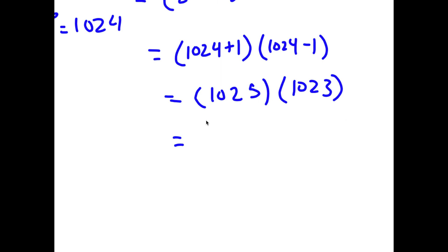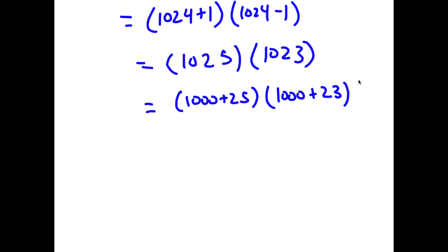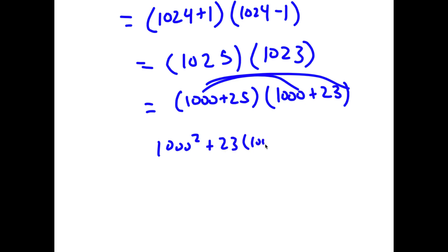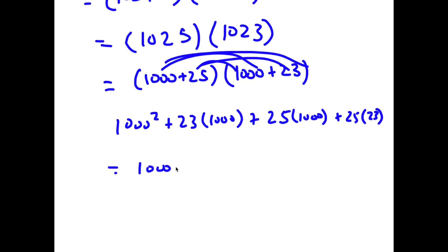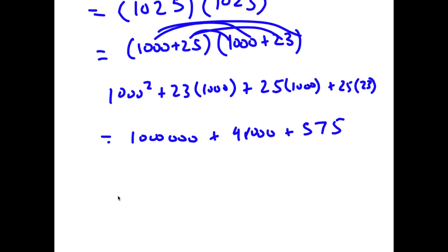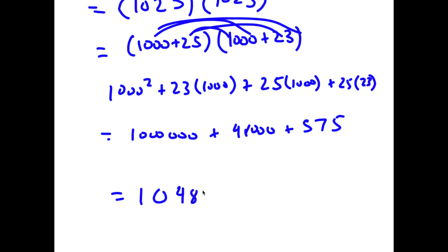To make this easier to compute, I'm going to rewrite 1025 as 1000 plus 25, and 1023 as 1000 plus 23. Distributing 1000, I have 1000 squared plus 23 times 1000. Distributing 25, I have plus 25 times 1000 plus 25 times 23. This equals 1,000,000 plus 23,000 plus 25,000, which is 48,000, plus 575. So the answer is 1,048,575.